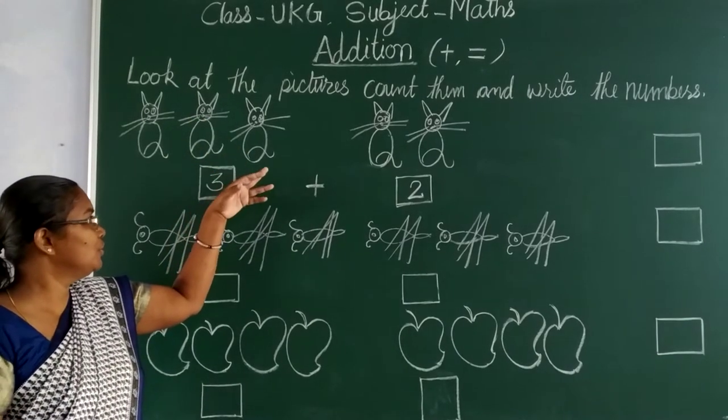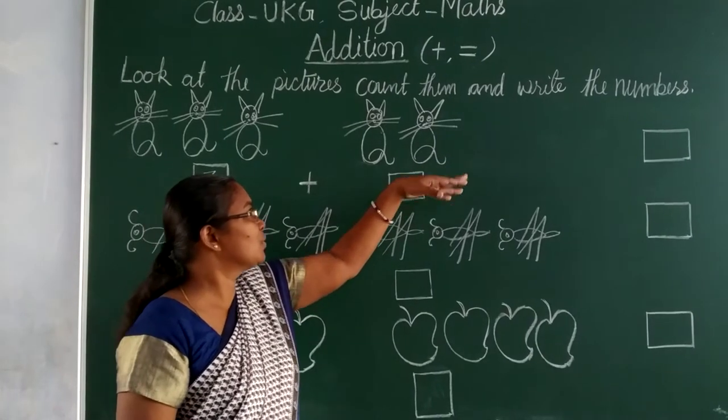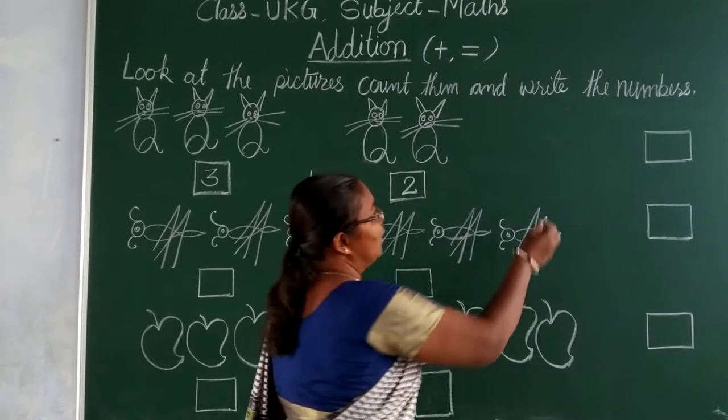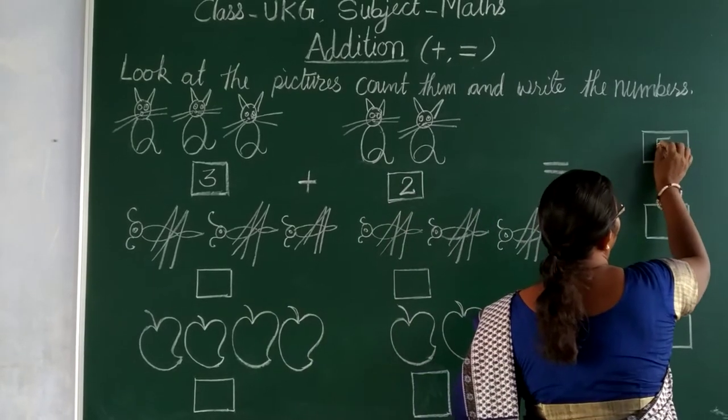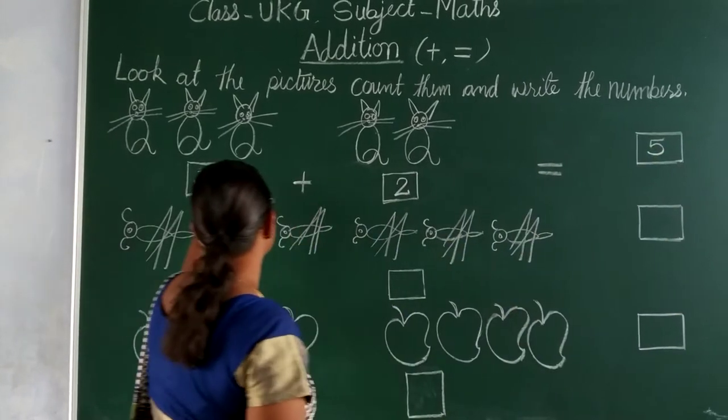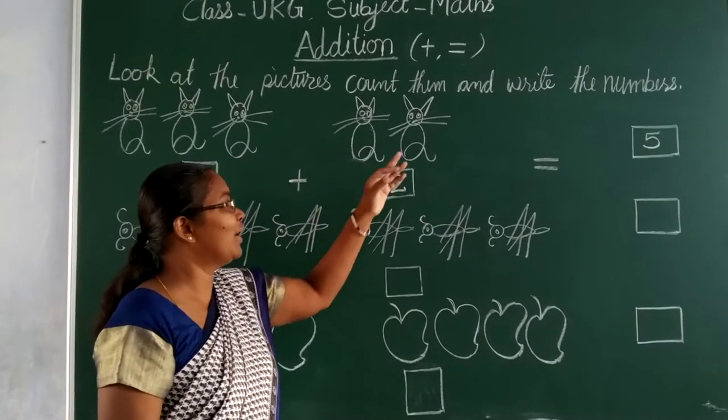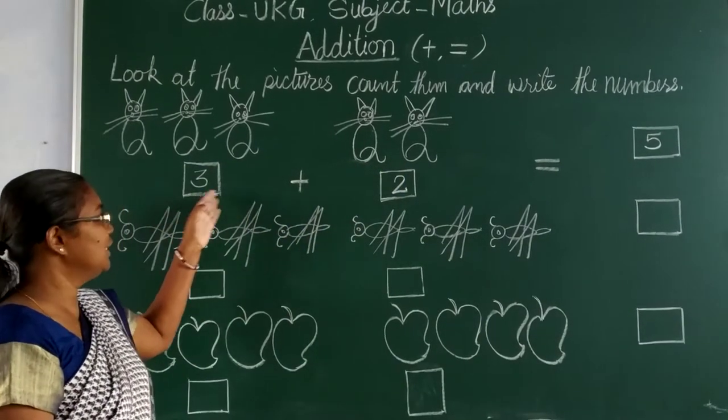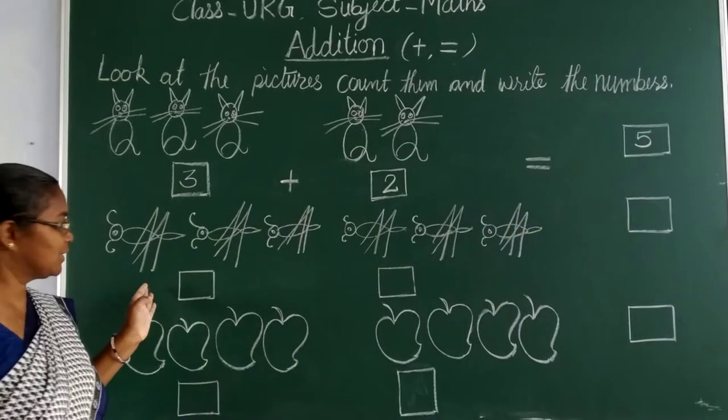1, 2, 3, 4, 5. So now we will put the equal sign, 5. Counting again: 1, 2, 3, 4, 5. That means 3 plus 2 is equal to 5. Next.